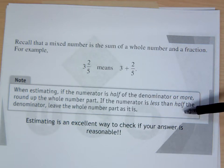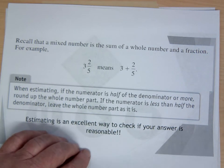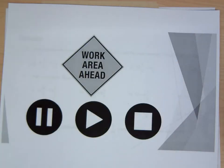And we should remember what a mixed number means. Three and two fifths means three plus two fifths. And this is the way we estimate if the number, if the numerator is half the denominator or more,